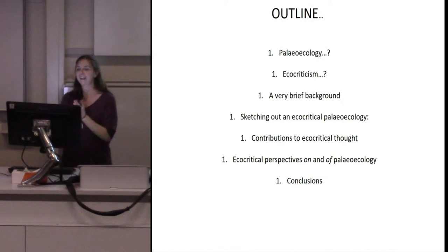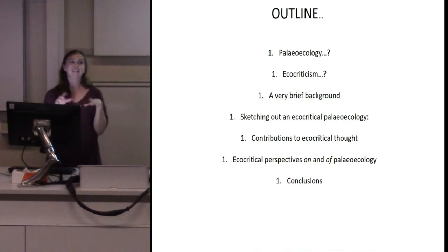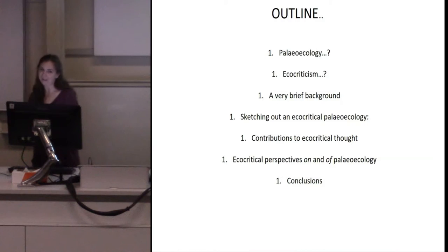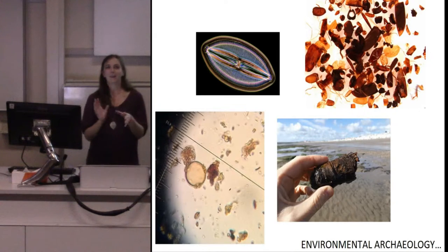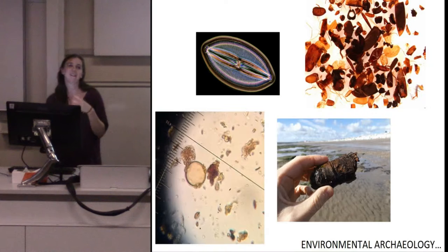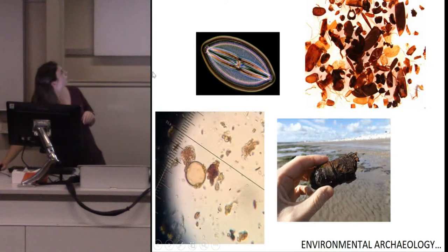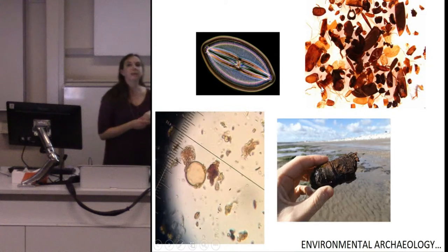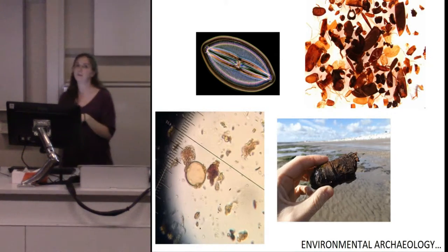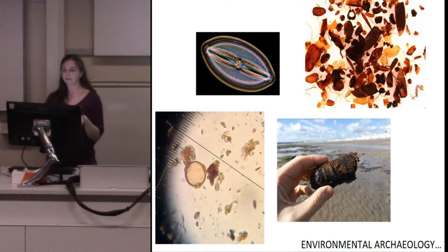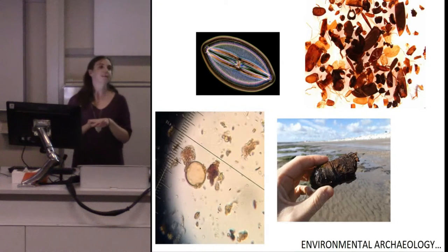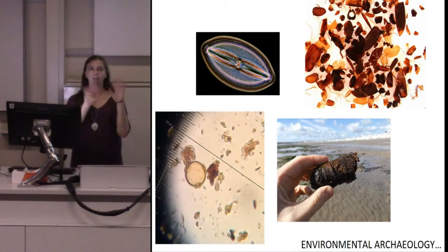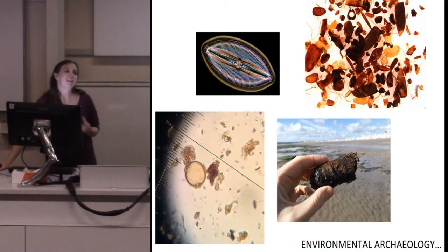We'll also look at ecocritical perspectives on and of paleoecology — this will become clear as we go along. We do have some paleoecologists in the room. Generally, paleoecology is about trying to look at past ecosystems and environments, through small things like bits of pollen and bits of insects, but sometimes also macro fossils — wood fragments, leaf fragments, seeds, nuts. Today, we're particularly focused on pollen within the context of paleoecology.